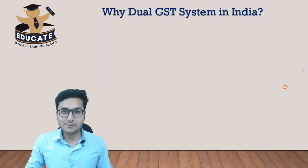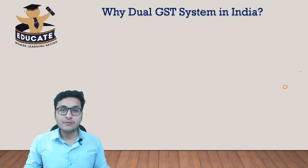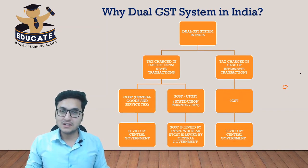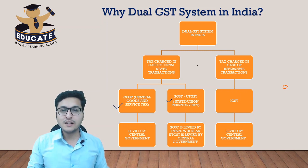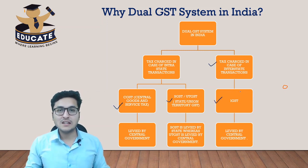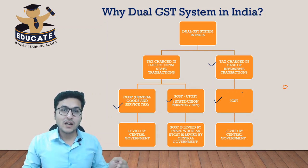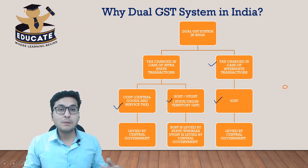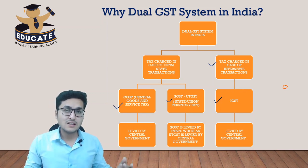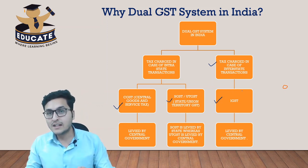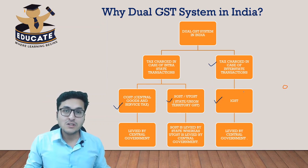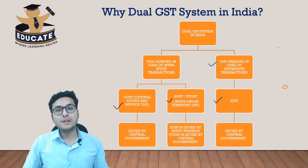Hello friends, welcome to Educate Academy. My name is Siraaj Kakwani and we will be continuing our discussion on the dual GST system. In the previous lecture we understood that in case of intrastate transactions two taxes are levied — CGST and SGST — whereas in case of interstate transactions only IGST is levied. This scheme of taxation wherein CGST and SGST are levied for intrastate and IGST for interstate transactions is known as the dual GST system.